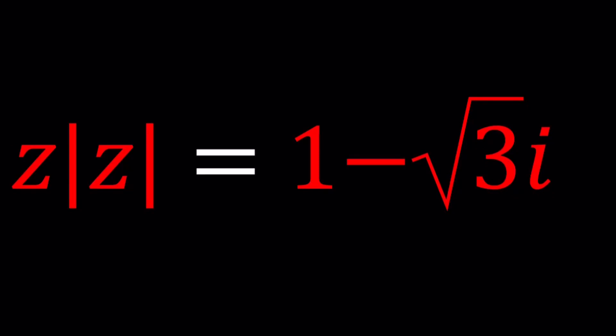Hello everyone, welcome to A plus PI. This channel is all about complex numbers, and in this video, we're going to be solving an equation for a complex number with absolute value. We have Z times the absolute value of Z equals 1 minus square root of 3 times I, and we're going to be solving for Z.